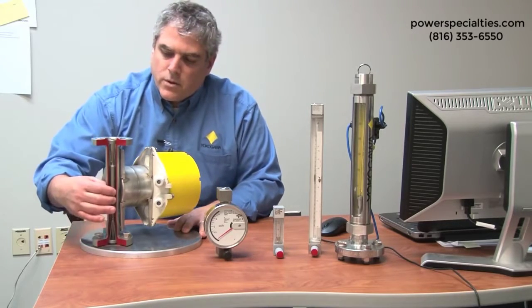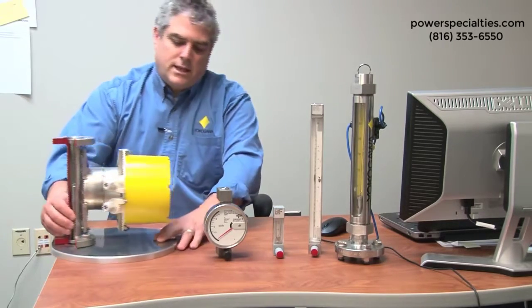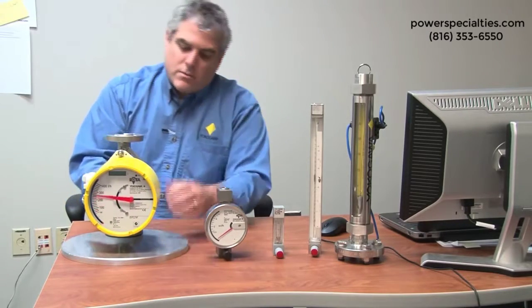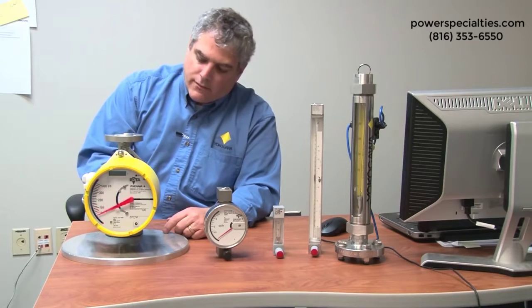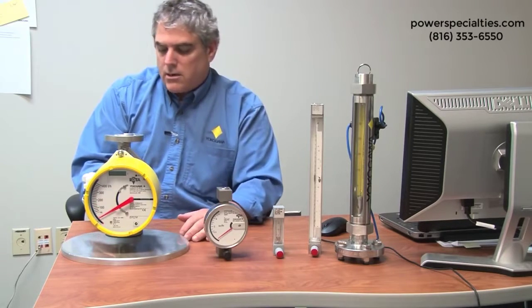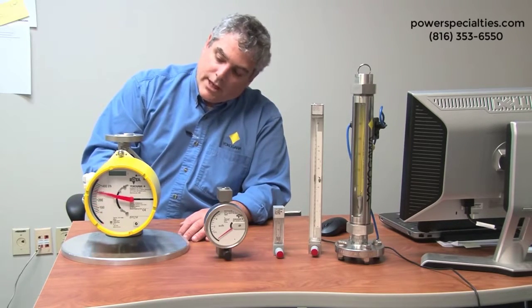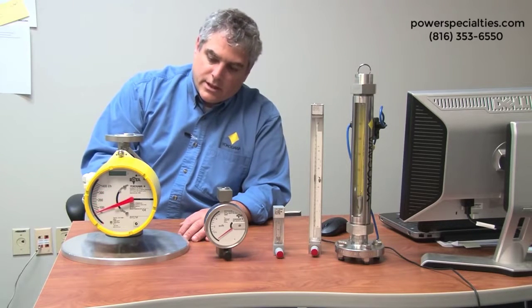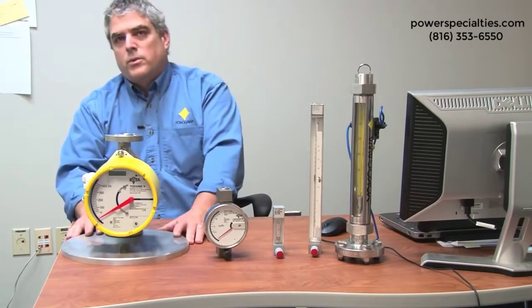So what we have done as the float goes out, we have to give an indication on the front of the rotometer to show you exactly. Using magnetics, magnet in the float and magnet on the indicator, as the float comes up, you'll see the float rate change on the indicator, and as the float turns down, you'll see the indicator come down and corresponding with the float.